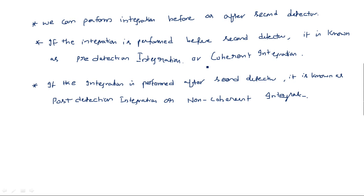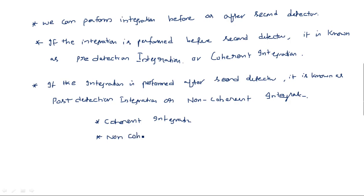In pre-detection (coherent) integration, phase information is preserved because the carrier is still present when integration is performed before the second detector. That is why it is called coherent. In post-detection integration, the carrier signal has been removed and there is no phase information, which is why it is called non-coherent integration. So the two types are: coherent (pre-detection) integration and non-coherent (post-detection) integration.